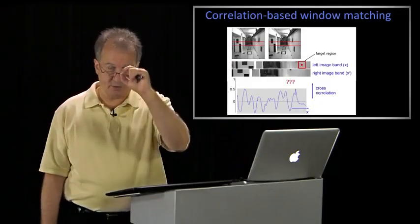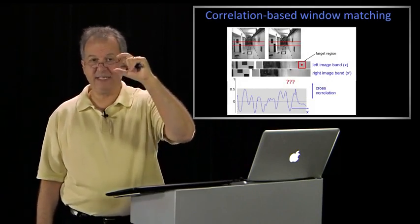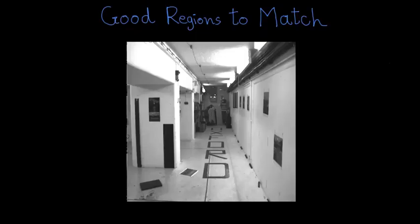So how could we fix this? Our problem is that the window was so small, that it didn't catch any sort of significant texture. So which regions in this image do you think are good for stereo matching? Mark the checkbox next to each suitable window. Let's assume that our stereo setup has coplanar image planes, and that the epipolar lines are horizontal.